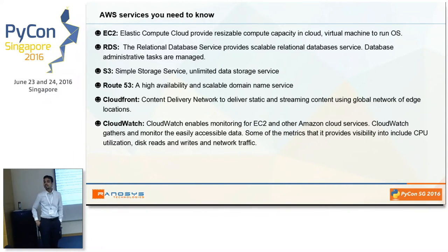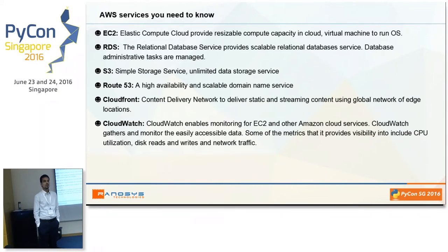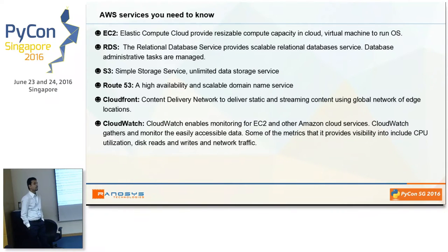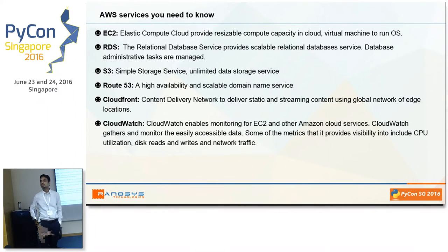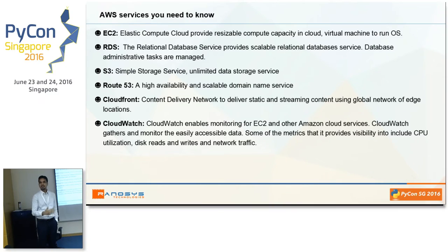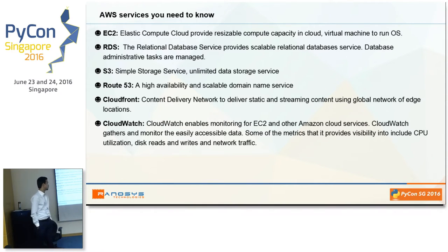The next service you might be interested in is CloudWatch. CloudWatch is a monitoring service which monitors AWS resources. Mostly we use it with EC2 and RDS, where you can monitor parameters like CPU utilization, disk reads, writes, and network traffic. Depending upon that, you can make business decisions — for example, if CPU utilization is more than 80% for 5 or 10 minutes, it can automatically start new instances to add scalability and keep your application up.